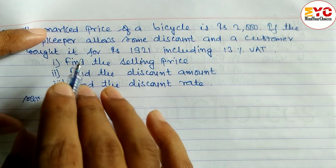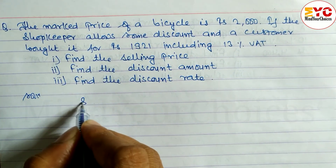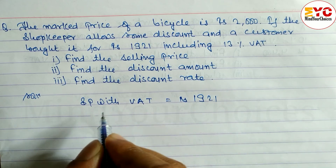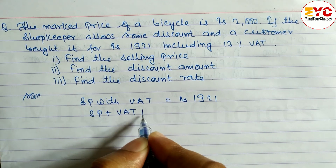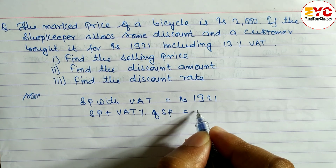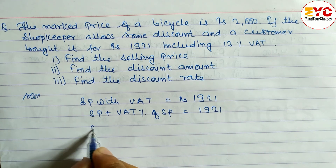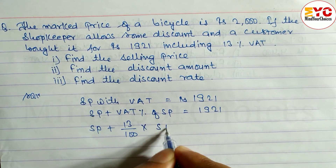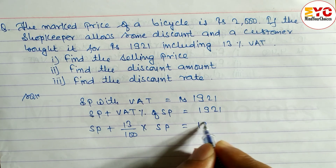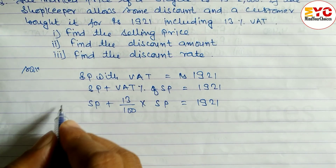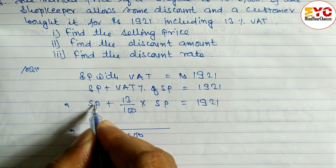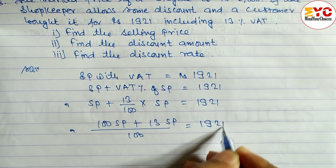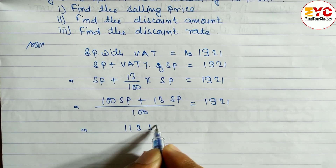VAT percent is 13%, so we use the SP with VAT formula. SP with VAT = Rs. 1921. The formula is: SP + VAT% of SP = Rs. 1921. So SP + 13/100 × SP = 1921. Taking LCM of 100: 100SP + 13SP divided by 100 = 1921.